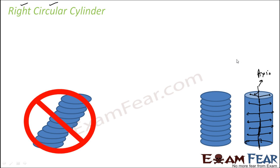The solid enclosed by this surface also includes two planes — the top one and the bottom one. These two planes are perpendicular to the axis and are also included in the right circular cylinder. So the solid enclosed by the curved surface and the two planes perpendicular to the axis is called a cylinder.